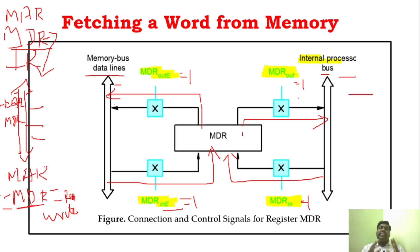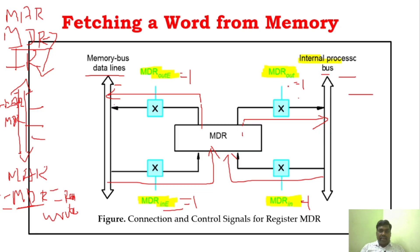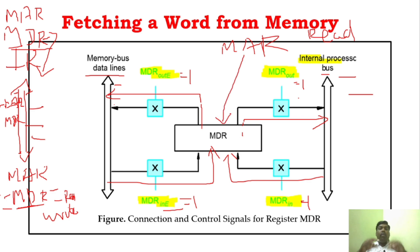This is called fetching a word from the memory — this is how the fetching operation takes place. The processor first informs the MAR about the address location of what is needed and initiates the read cycle. From MAR it is sent to the MDR. Now MDR, if it wants to transfer to the internal bus it can transfer; if it wants to transfer to the external bus it can transfer. When transferred to the internal bus, from there you can transfer to any register you want — R3 or any register.